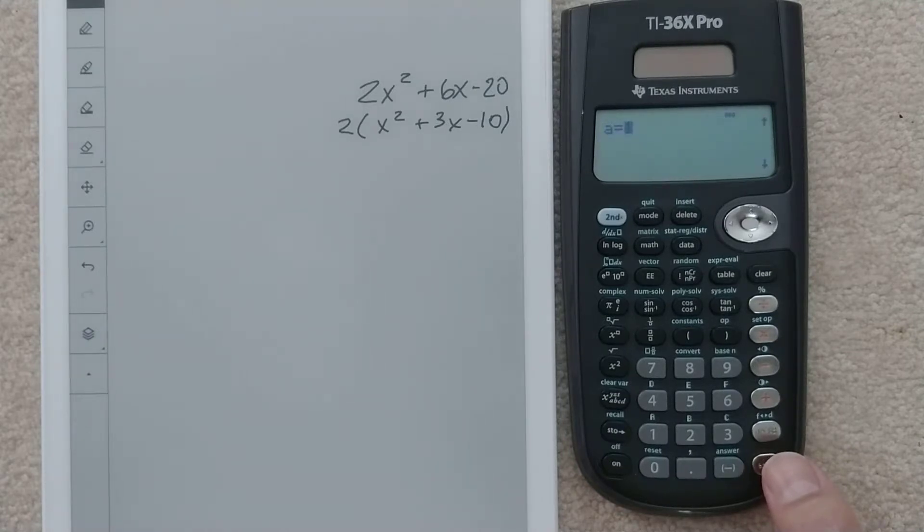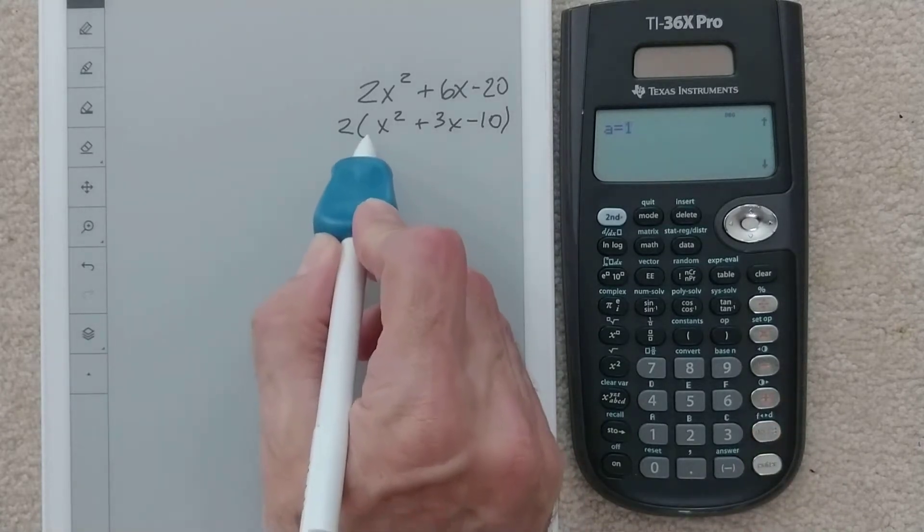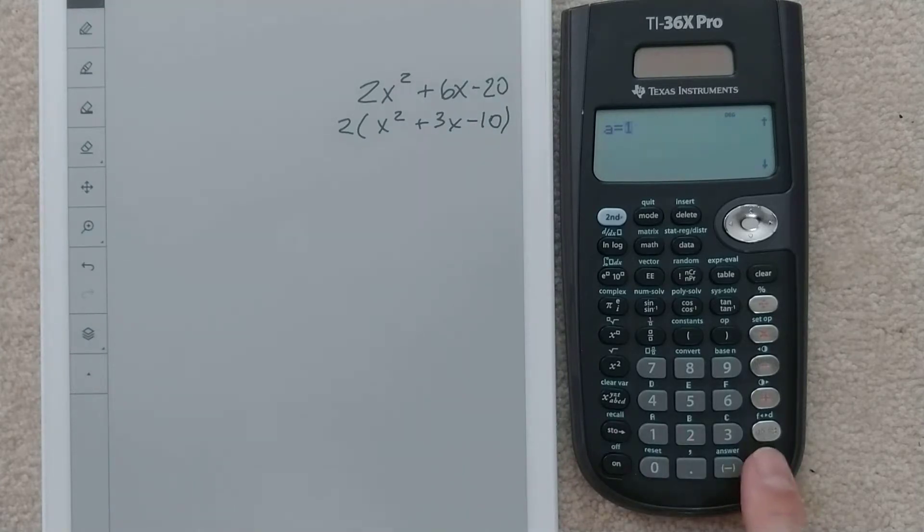We need to put in our a value. It says 1, and that's correct. Anytime you don't have a number in front, you want to put a 1.